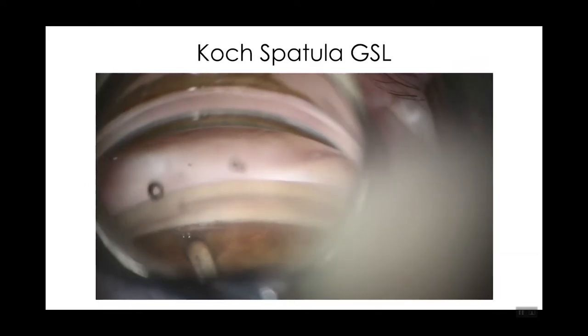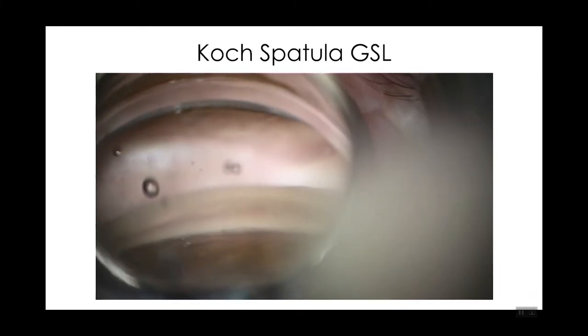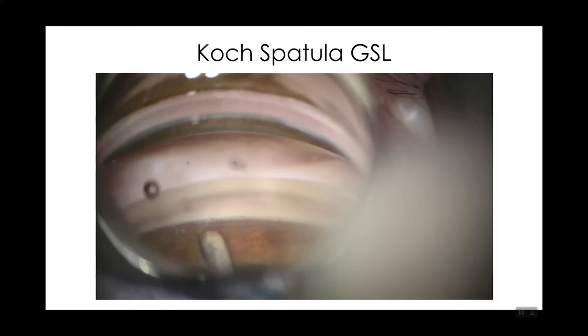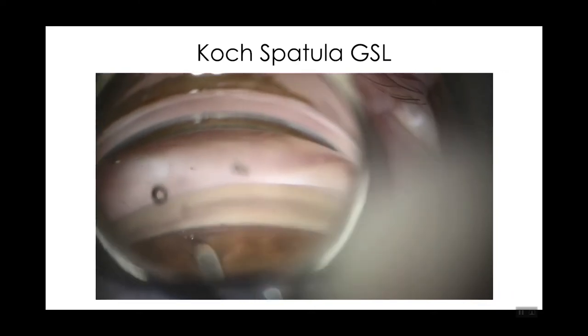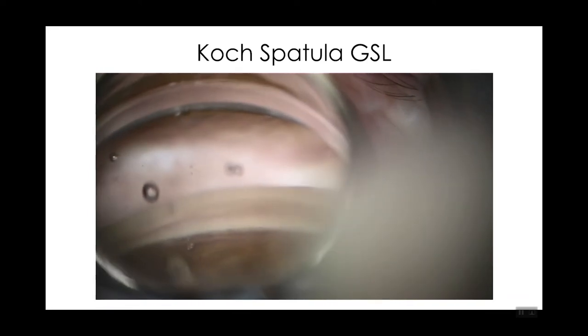This is a case showing a technique with a Koch spatula. After deepening the angle with a cohesive viscoelastic, the spatula goes into the nasal angle through the clear corneal incision, and the periphery of the iris is padded down away from the trabecular meshwork. This is a common technique used by many surgeons and can be quite effective at separating the PAS.